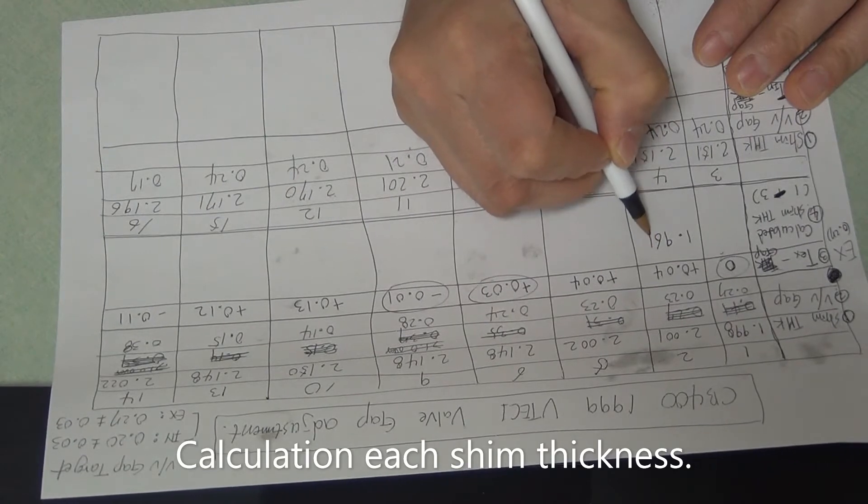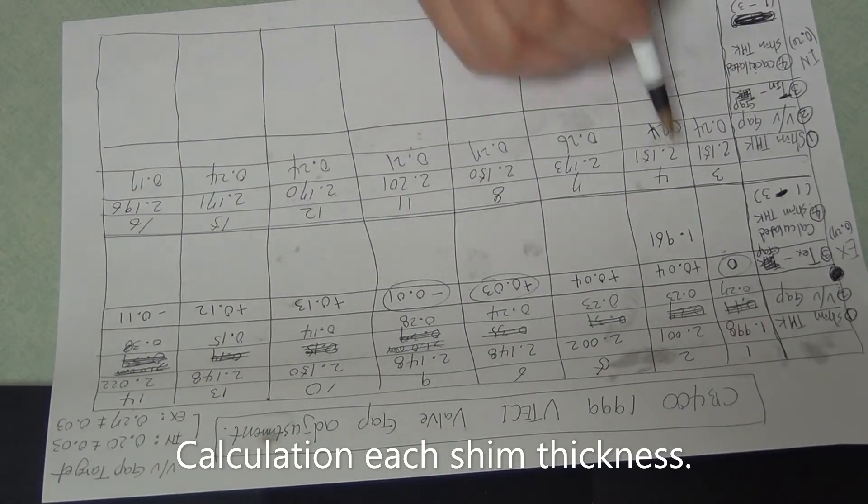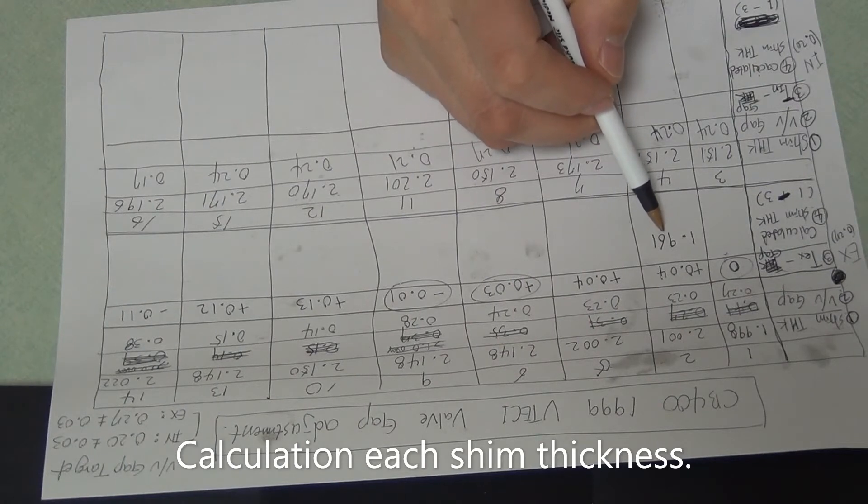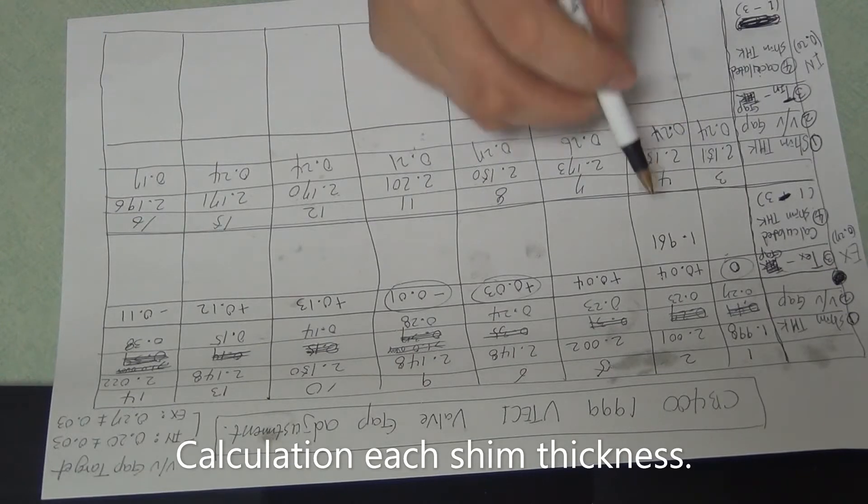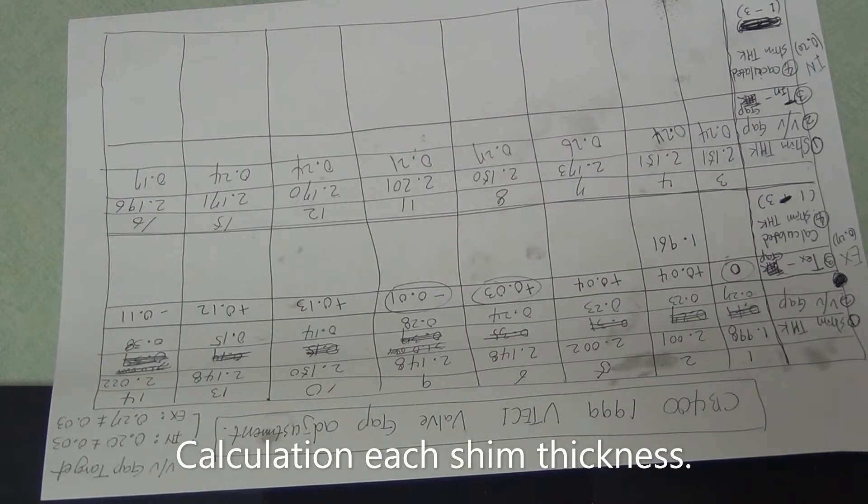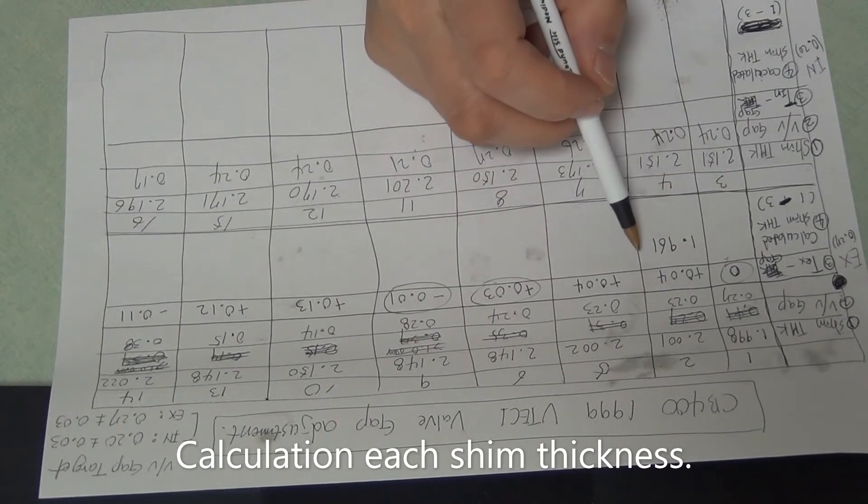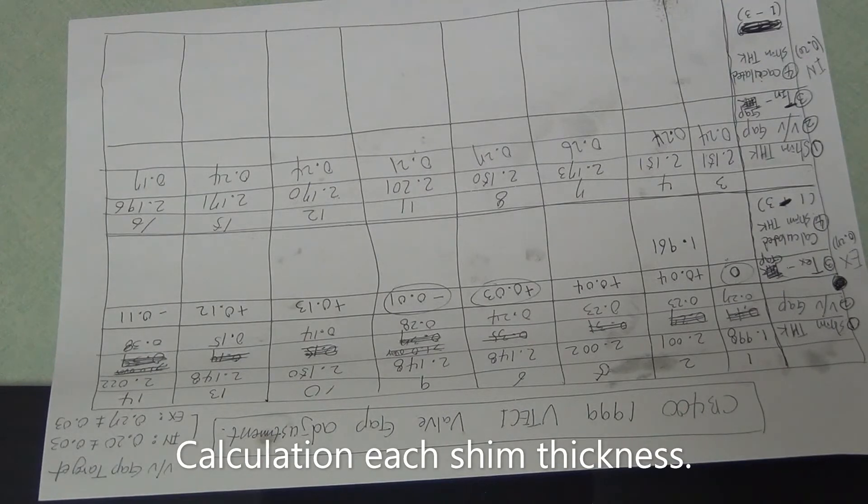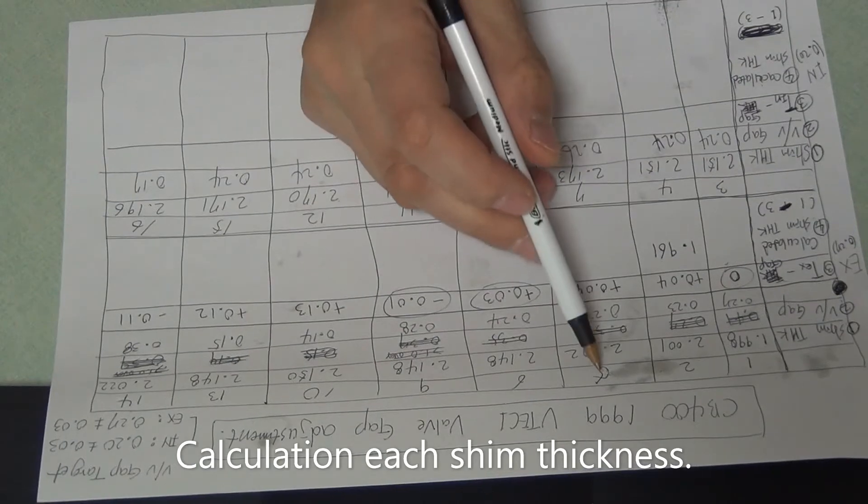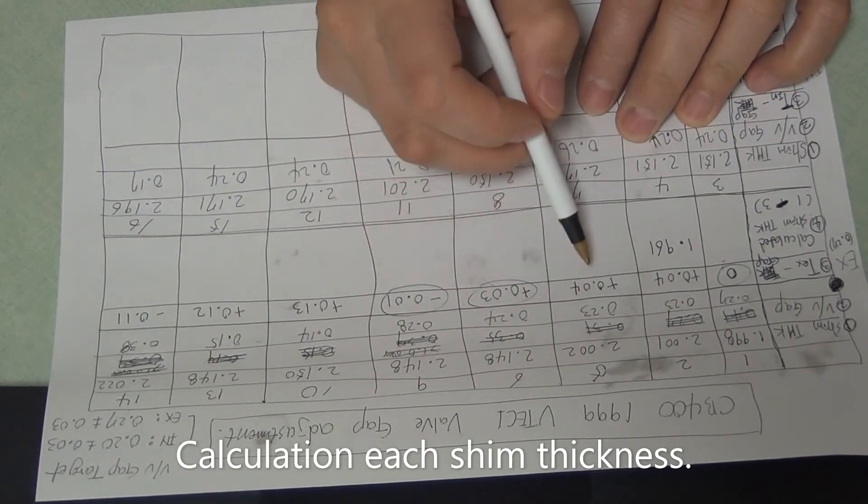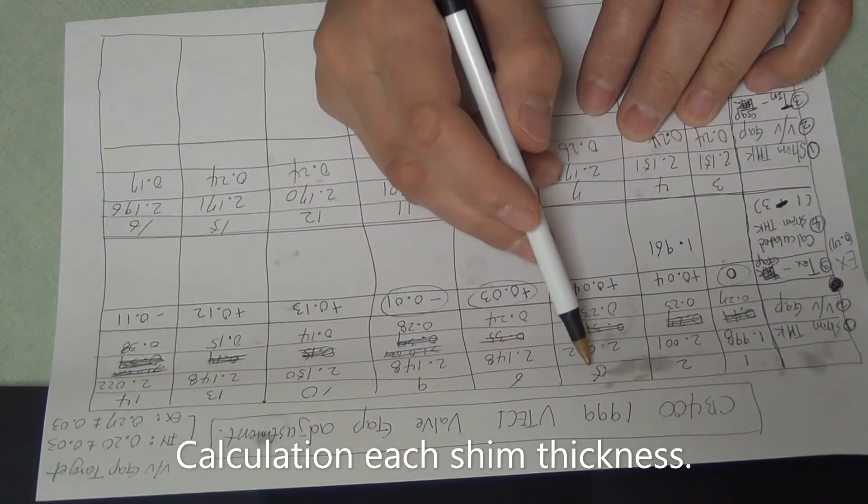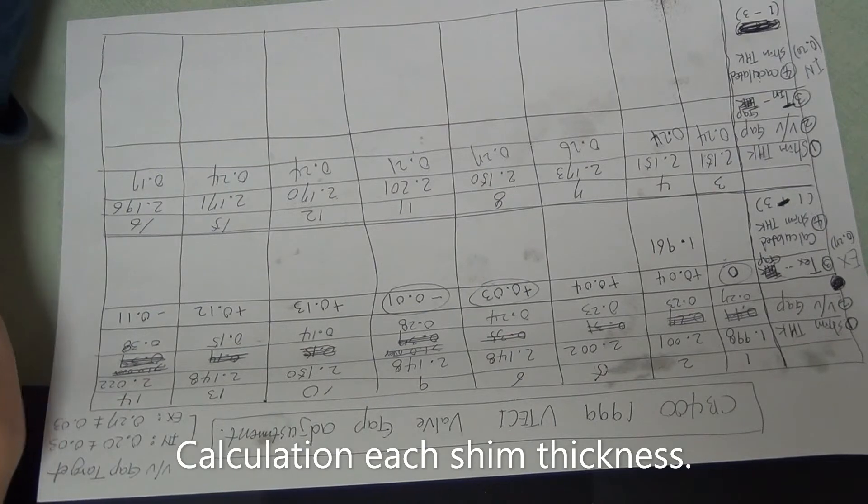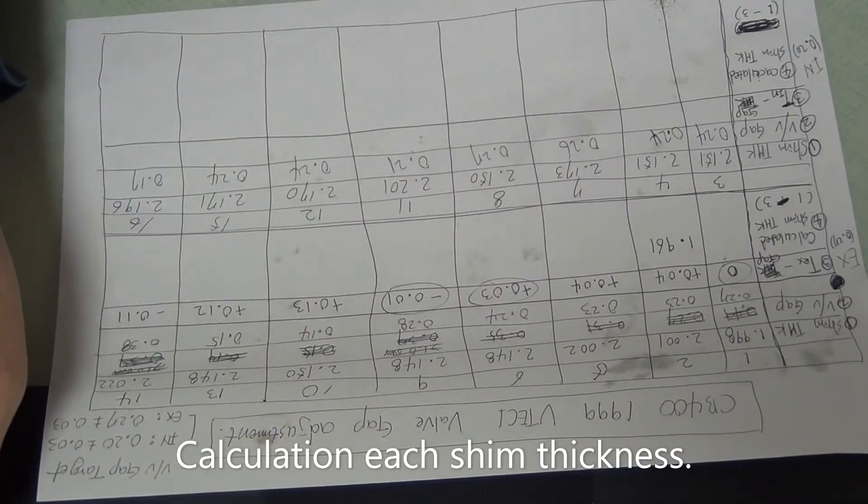So we need 1.961, one millimeter, one point nine six one. Maybe one point nine six or five, one point nine five is okay, one point nine seven also okay. One point nine six okay. Then number five, 0.04, so calculated shim thickness 2.002, so 2.002 minus 0.04.